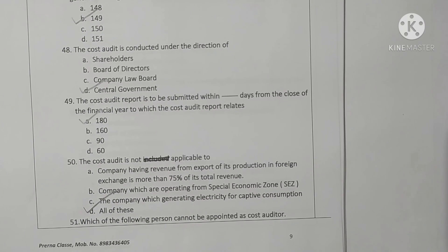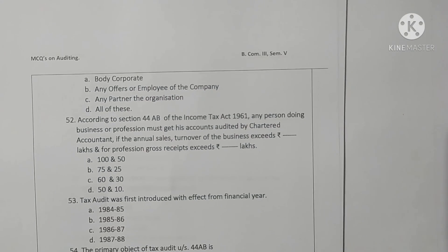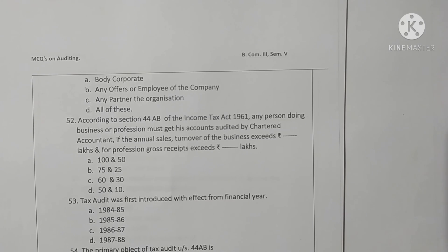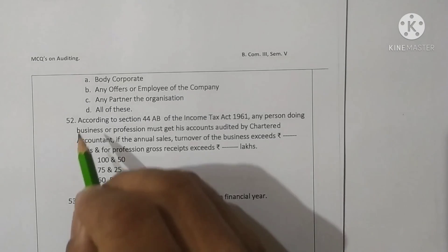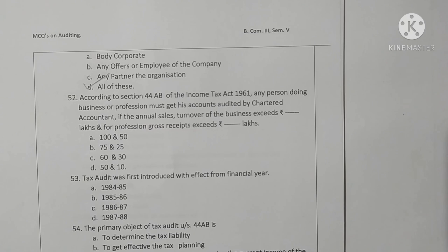Question 51: Which of the following persons cannot be appointed as an auditor? Options are a body corporate, any officer or employee of the company, any partner of the organization — all of these, option D is correct. Question 52: According to section 44AB of the Income Tax Act 1961, any person doing business or profession must get accounts audited by a chartered accountant if annual sales turnover exceeds 100 lakhs and for profession gross receipts exceed 50 lakhs — option A is correct.